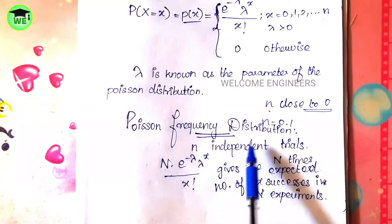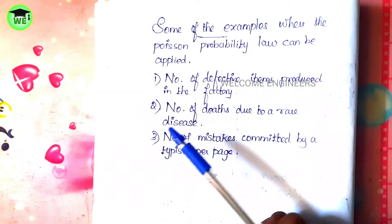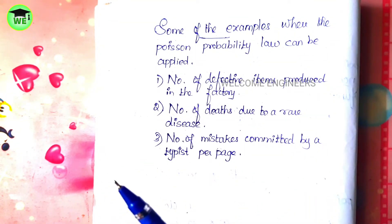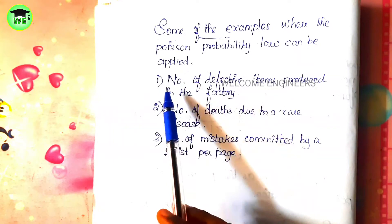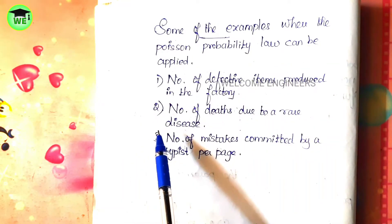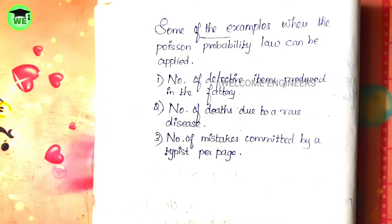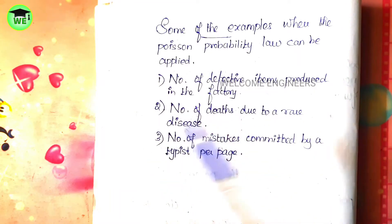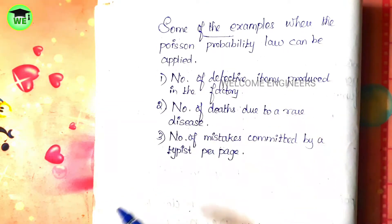Here are some examples where the Poisson probability law can be applied. The first one is the number of defective items produced in a factory — a manufacturing unit produces items where some are defective, and that percentage is very low. The second is the number of deaths due to a rare disease, such as the current scenario of COVID-19. The third is the number of mistakes committed by a typist per page.